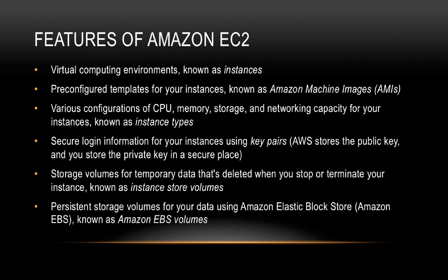Amazon EC2 provides virtual computing environments known as instances. When you actually launch a virtual server in EC2, we call them EC2 instances. It provides pre-configured templates for your instances, also known as Amazon Machine Images. For example, if we want to launch a server of type Windows 2012 Server, the operating system is already available — we just pick that and launch the instance. The template used is known as the Amazon Machine Image.